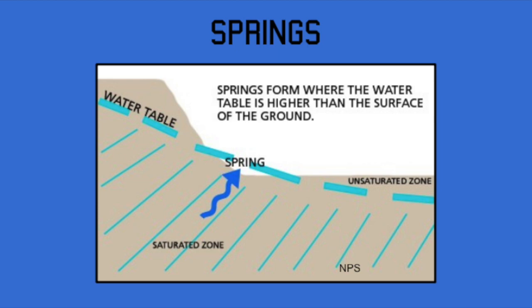Almost all the water in these channels comes directly from the spring. The amount of water from the spring determines how big the stream is and how long it flows.